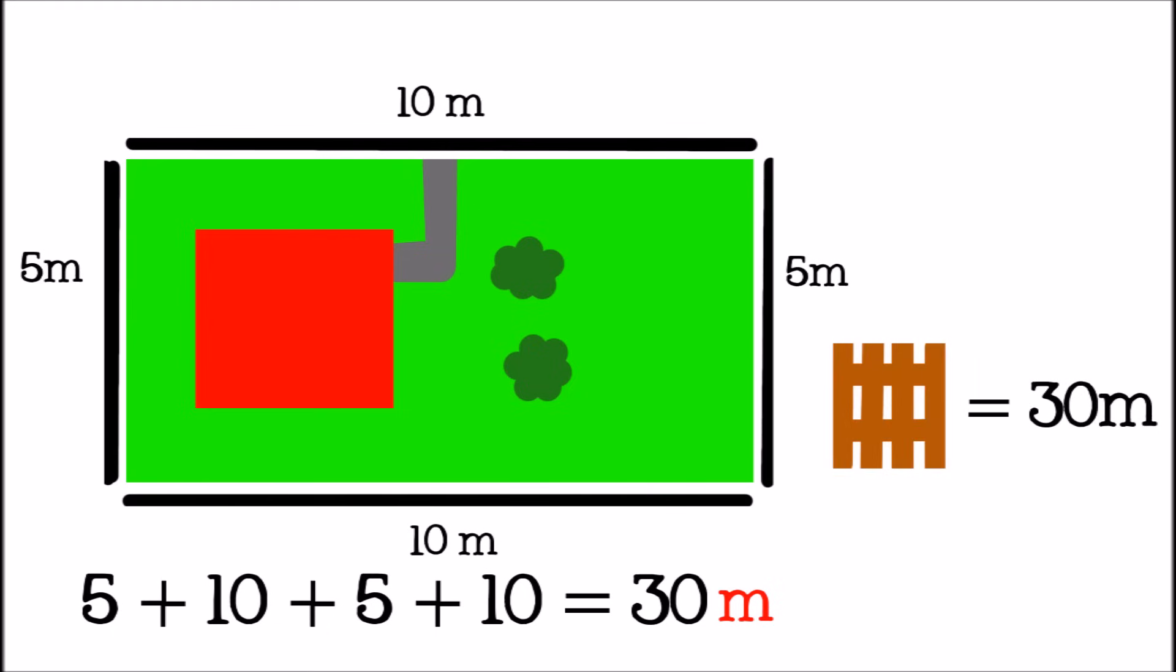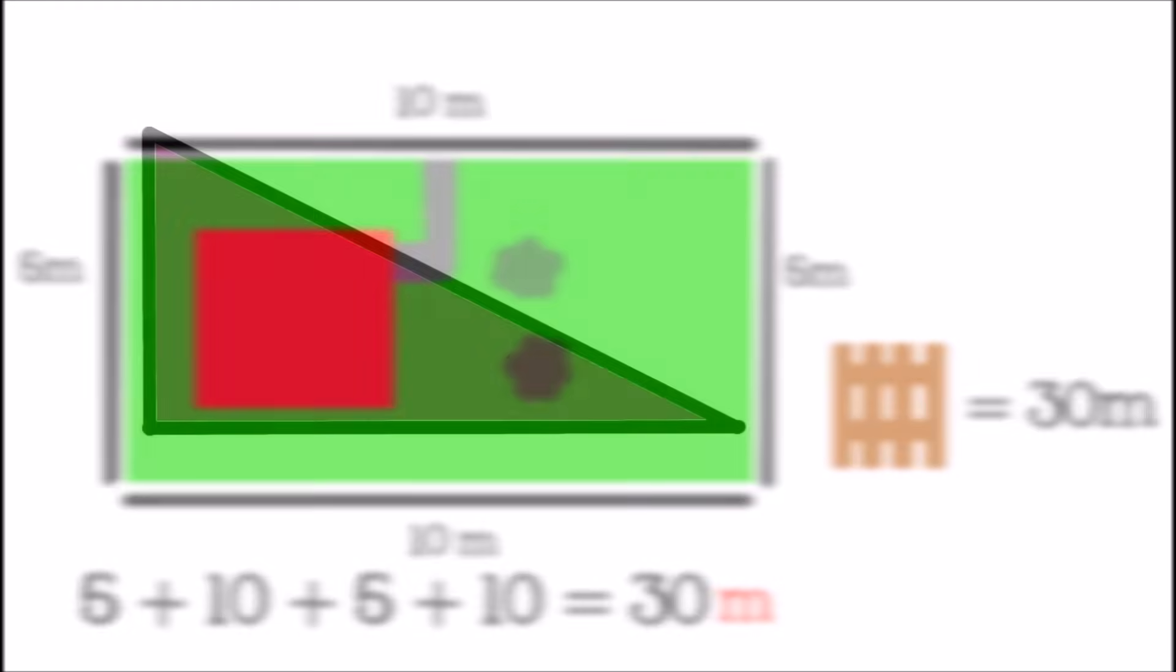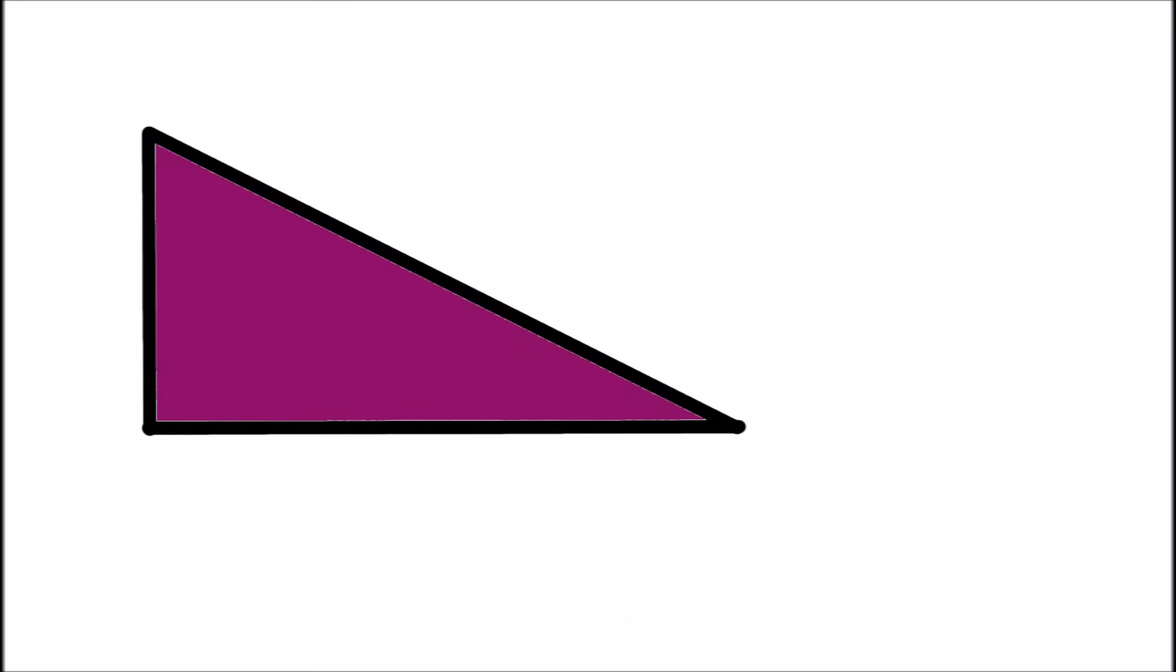Now we're going to find the perimeter of some more shapes. Let's start with a triangle. This triangle has three sides with three different lengths: five feet, ten feet, and eight feet. To find the perimeter of the triangle, all we need to do is add the lengths of the three sides. Five plus ten plus eight equals twenty-three.